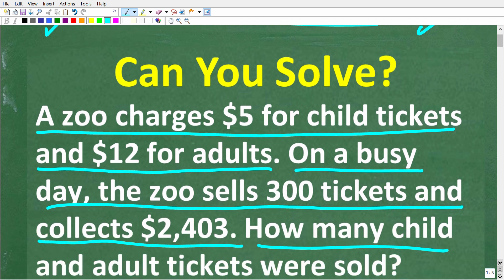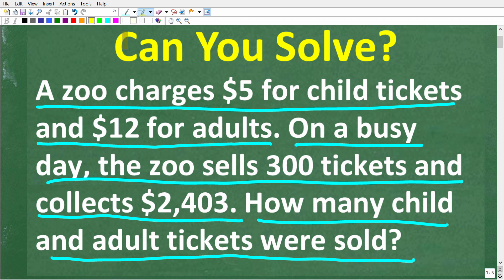So one more time: a zoo charges five dollars for child tickets and twelve dollars for adult tickets. On a busy day the zoo sells three hundred total tickets and collects two thousand four hundred and three dollars. How many child and adult tickets were sold? Let's take a look at the full solution to this problem.